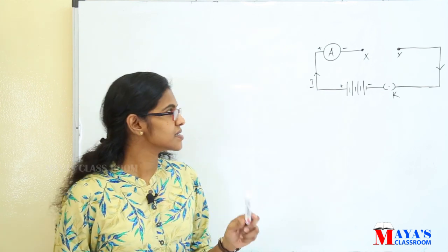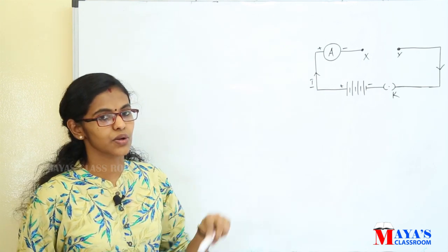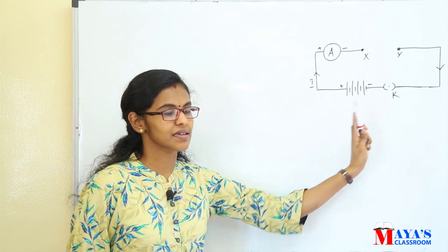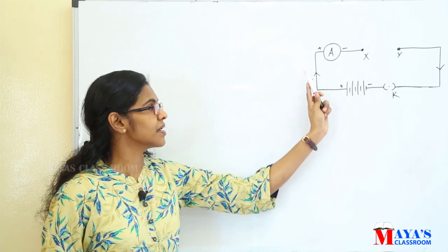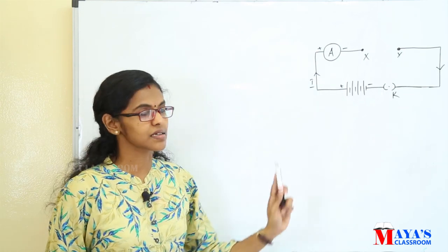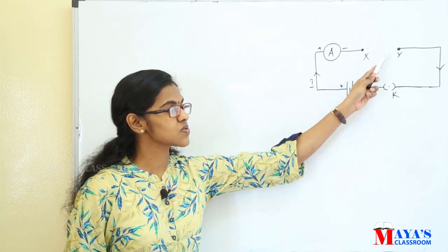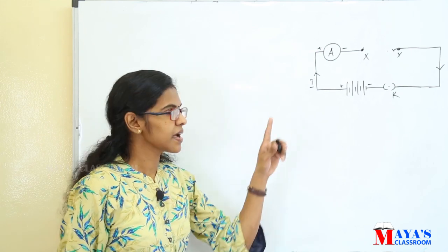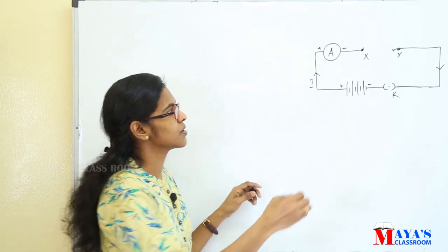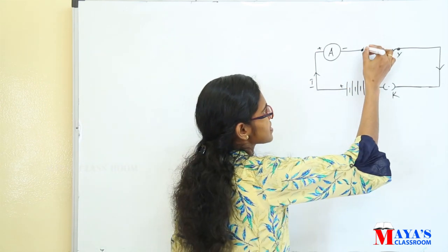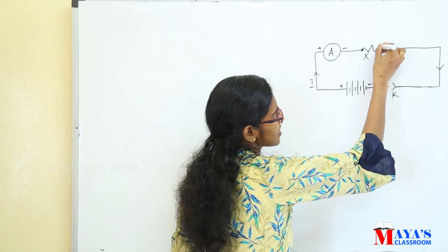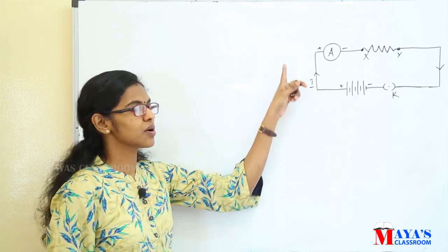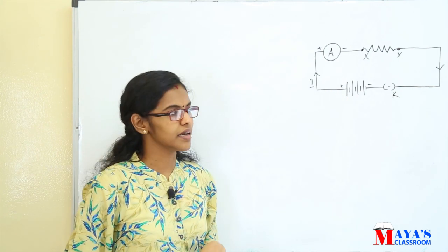For that, here we consider an electrical circuit consisting of a battery, a key, and an ammeter which is connected in series. Here XY is a gap. By connecting a nichrome wire in the gap XY, then plug the key and note the ammeter reading.